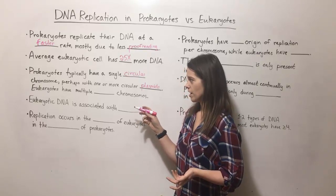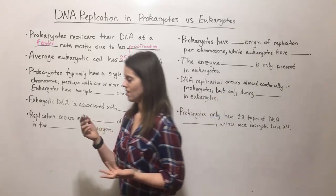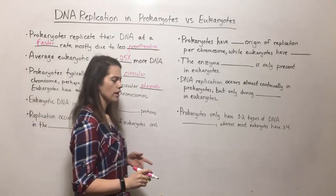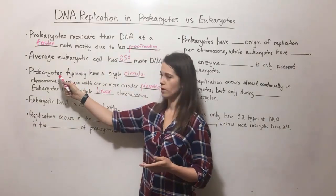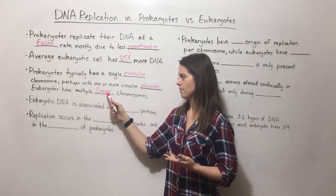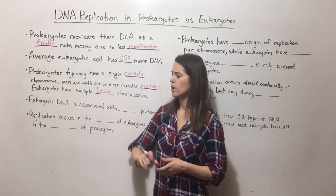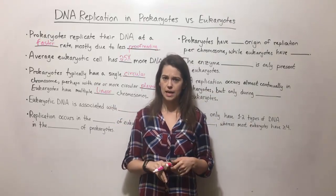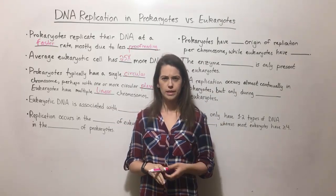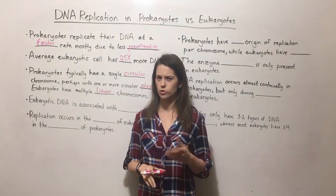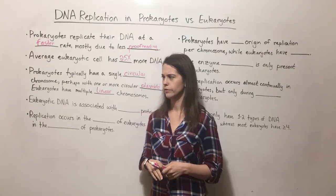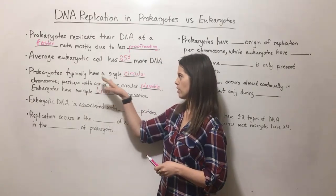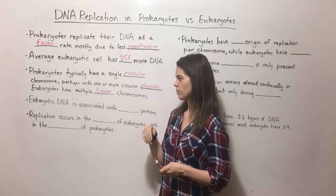On the other hand, eukaryotes have multiple chromosomes and they tend to be linear. There are a couple of exceptions where some prokaryotes do have linear chromosomes — the most notable is probably Borrelia burgdorferi, which causes Lyme disease. The bacterium Streptomyces griseus also has linear chromosomes; that's where streptomycin, the antibiotic, was first identified. But almost always prokaryotes have circular chromosomes and eukaryotes have linear chromosomes.